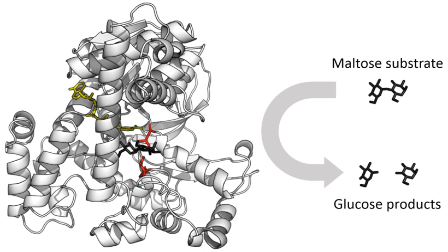Metabolic pathways depend upon enzymes to catalyze individual steps. The study of enzymes is called enzymology, and a new field of pseudoenzyme analysis has recently grown up, recognizing that during evolution some enzymes have lost the ability to carry out biological catalysis, which is often reflected in their amino acid sequences and unusual properties. Enzymes are known to catalyze more than 5,000 biochemical reaction types.